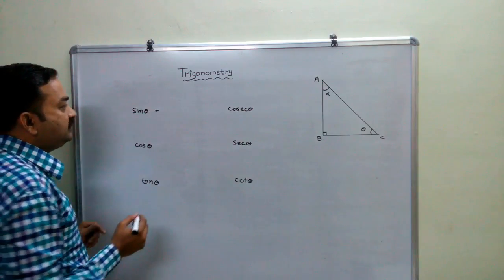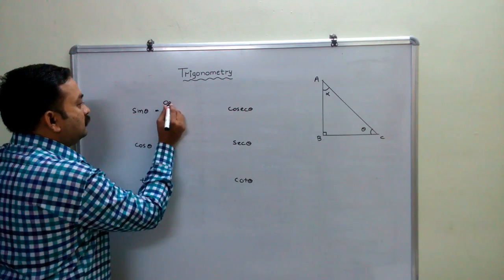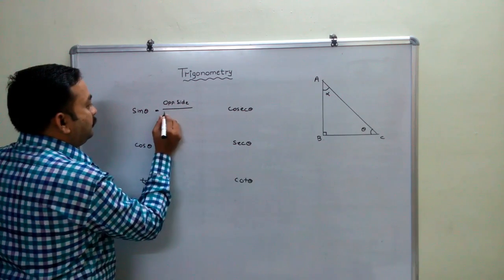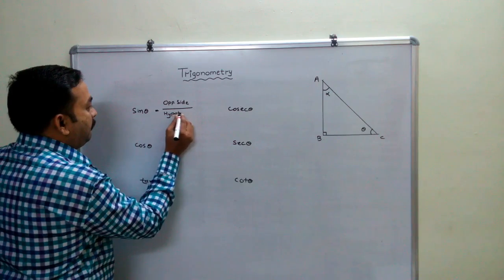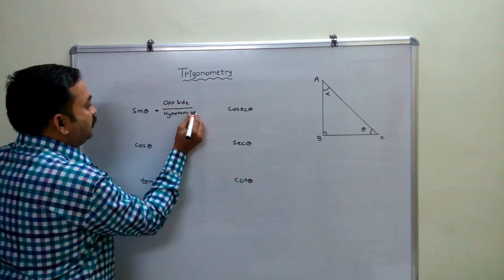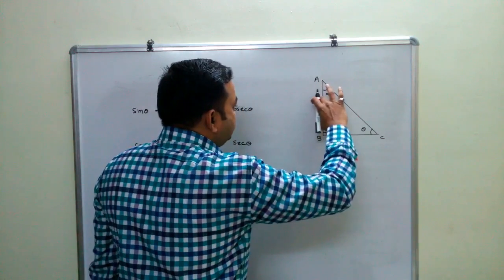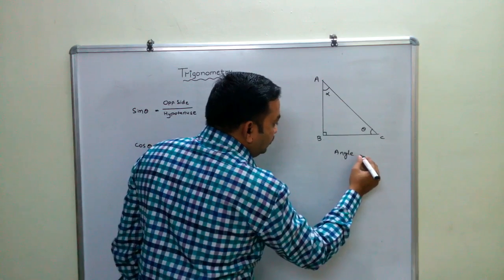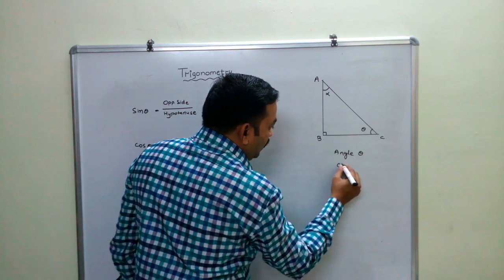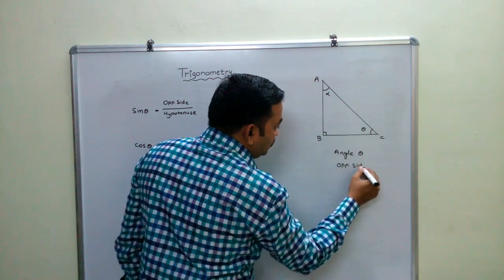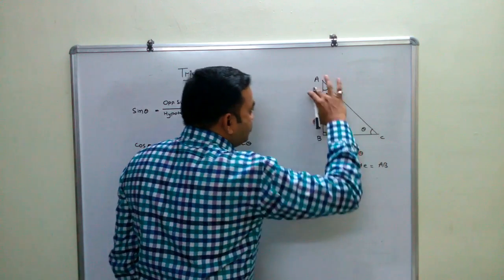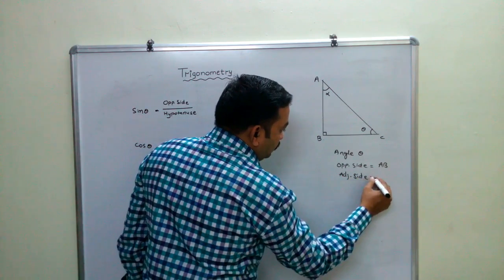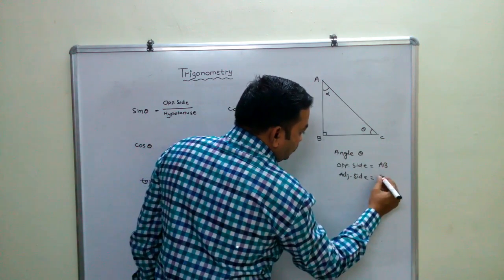The value of sin theta is opposite side upon hypotenuse. For angle theta, the opposite side is AB, and the adjacent side is BC.